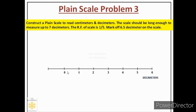Next we have to decide the number of parts for this section of the scale, which depends on the next unit to show. The next unit is centimeters. This part represents 1 decimeter and we have to convert it into a centimeter scale. Since there are 10 centimeters in 1 decimeter, we make 10 parts here. This length is 2 centimeters, so dividing into 10 parts gives each part a length of 0.2 centimeters or 2 millimeters, representing 1 centimeter.